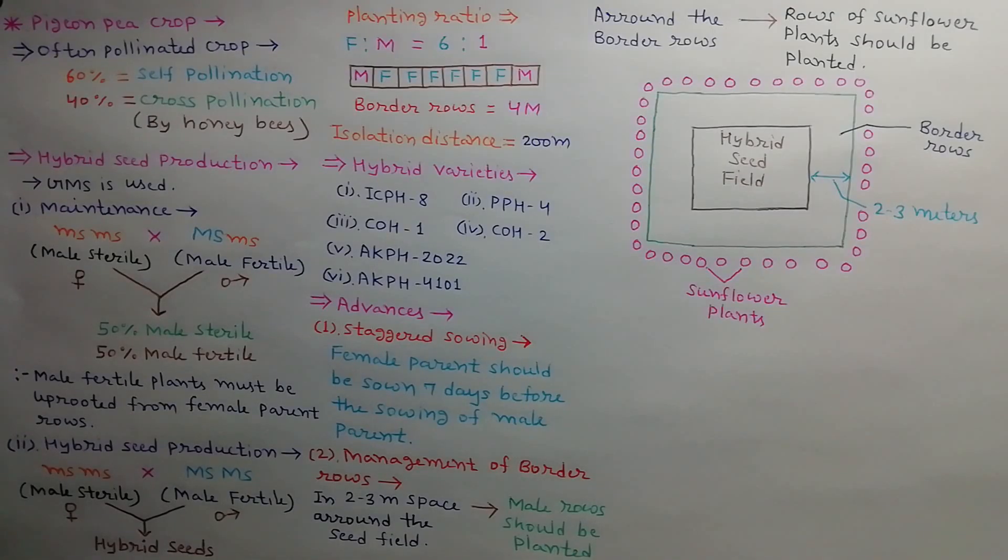Rows of sunflower plants are planted around the border rows to attract the honey bees for the purpose of pollination, as described in the diagram.